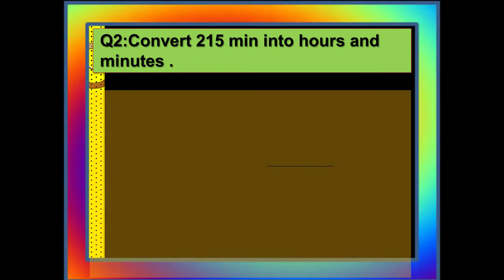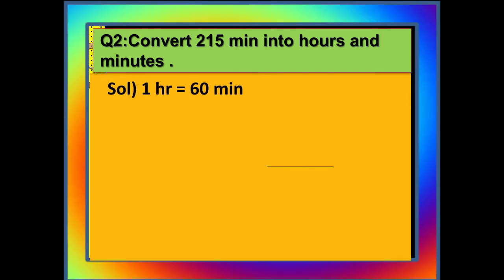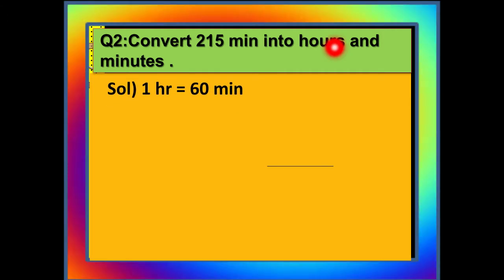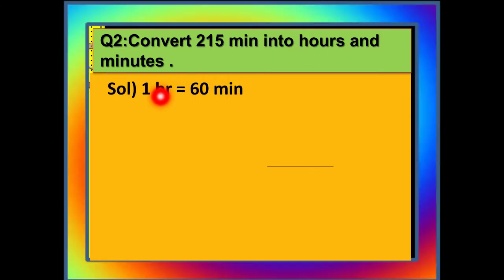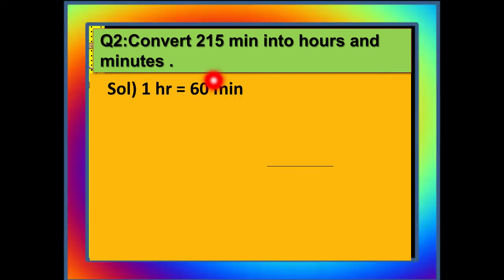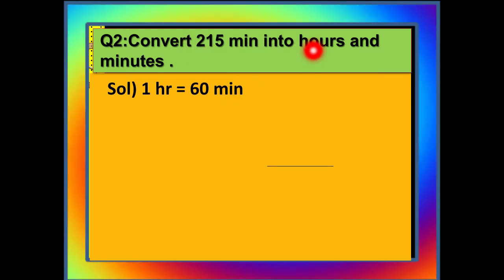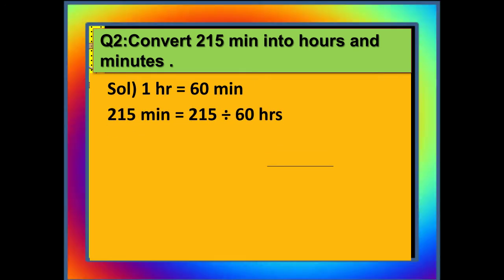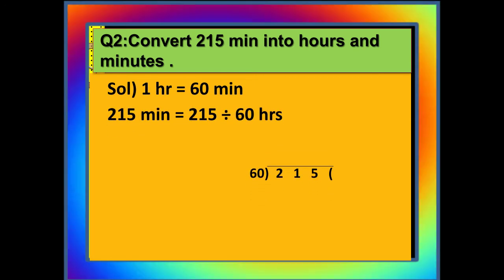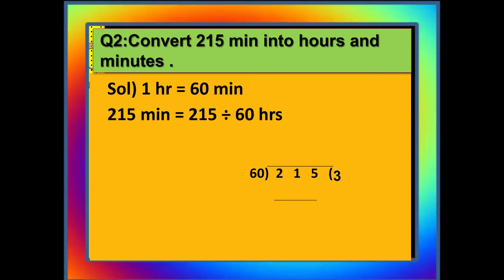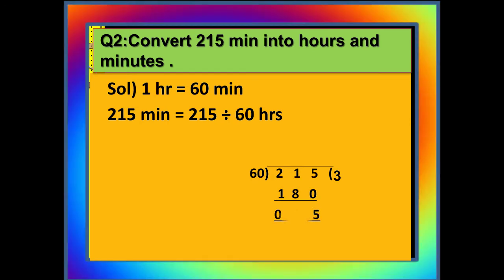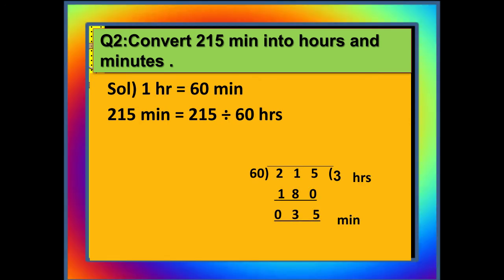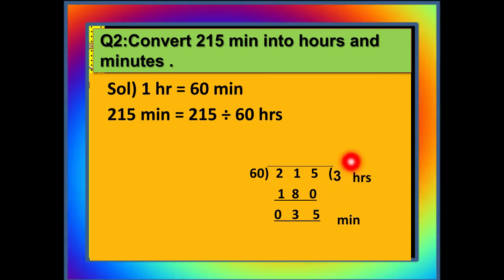Now we will learn how to go from minutes into hours and minutes. One hour has 60 minutes. To convert 215 minutes into hours and minutes, we will divide it by 60. After dividing 215 by 60, we get 3 as our quotient and 35 as our remainder.